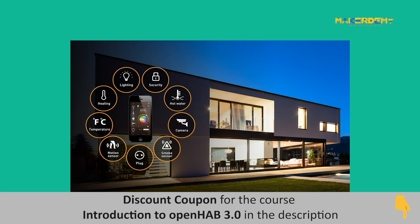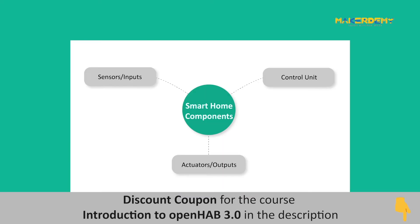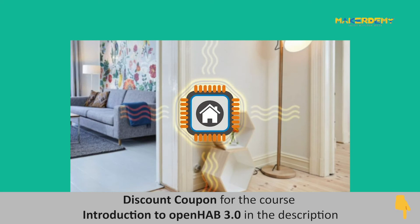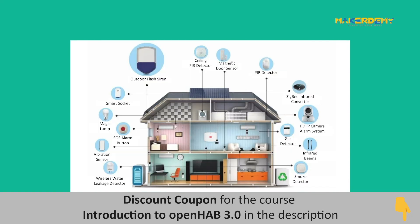There are three main components for a smart home system: sensors, controllers, and actuators. Sensors are important as they give the input data to the home automation system. Nowadays a wide variety of sensors are available for smart homes.